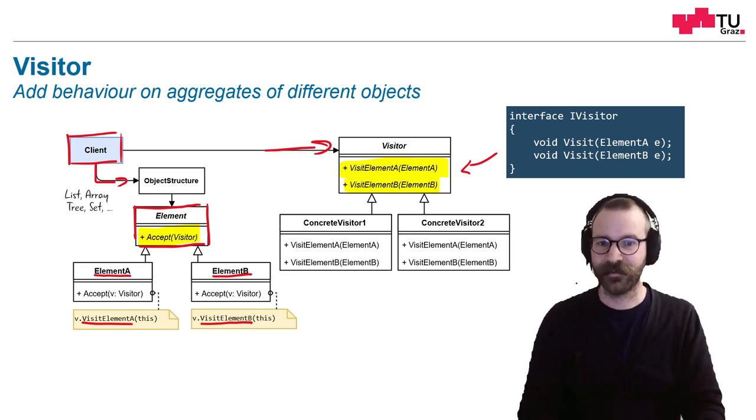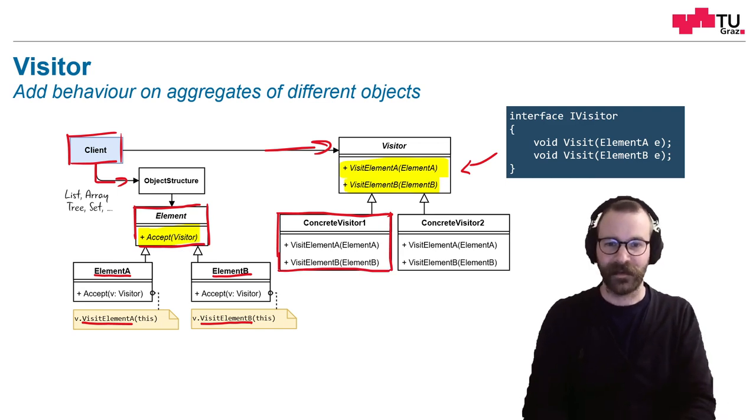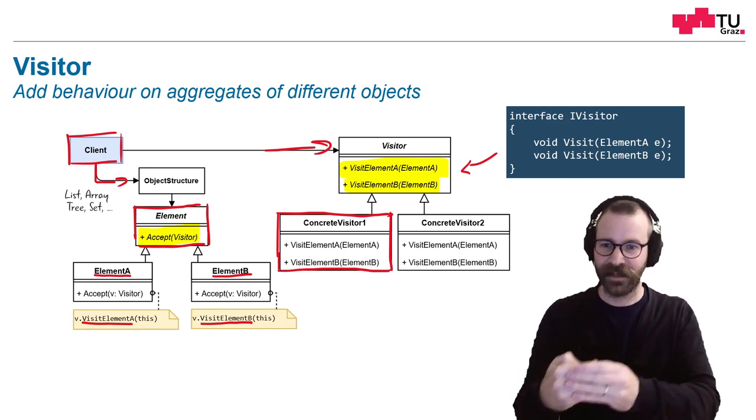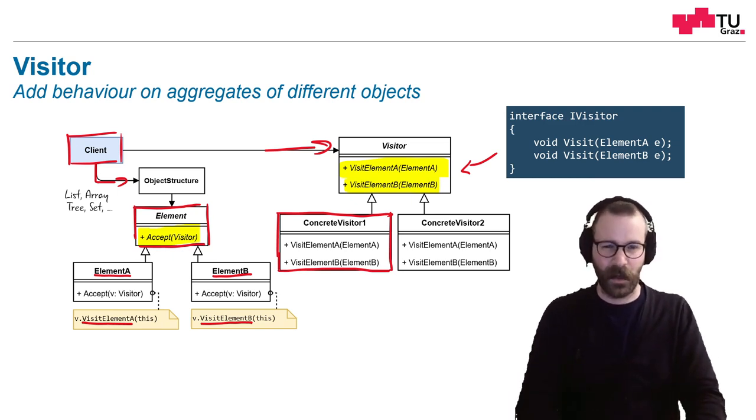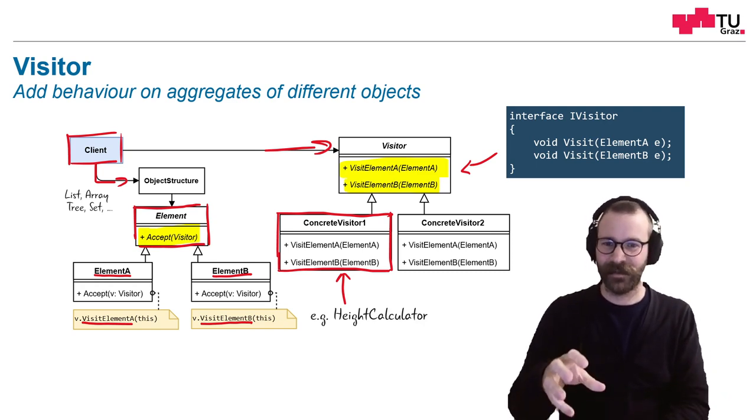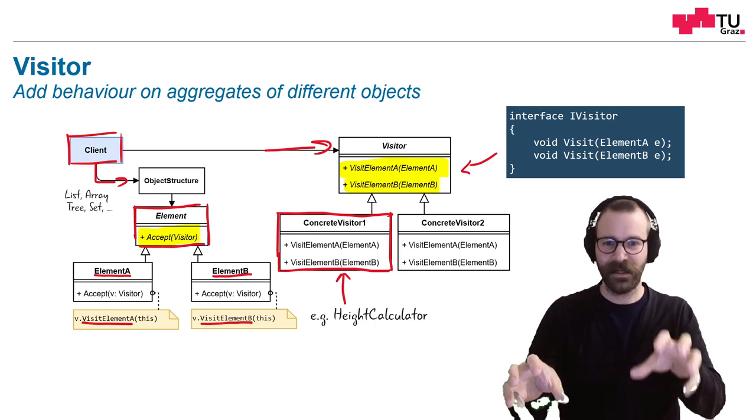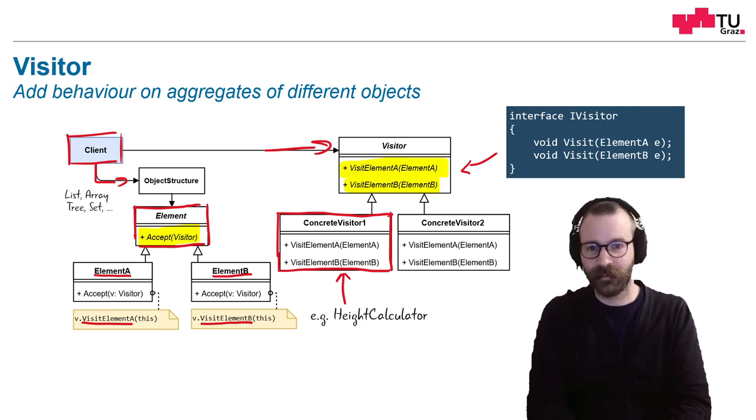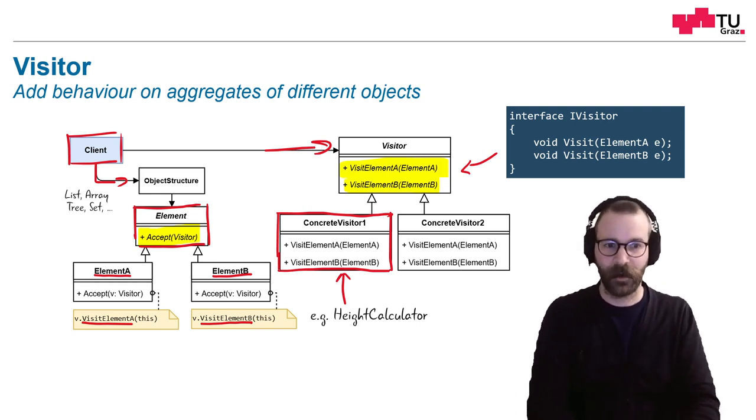But let's continue with the visitor now. What if you want to implement this visitor, like here, a concrete visitor implementation needs to implement both elements, visit element A and visit element B. What does this mean? For example, this could be our height calculator. Element A could be the circle, element B could be the square and so on. And we want to calculate the height. For this, we have to implement both methods for both object types.